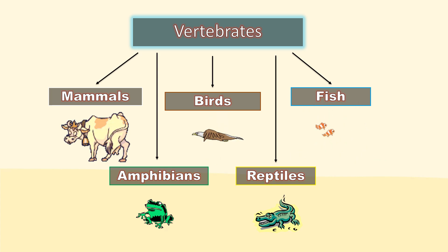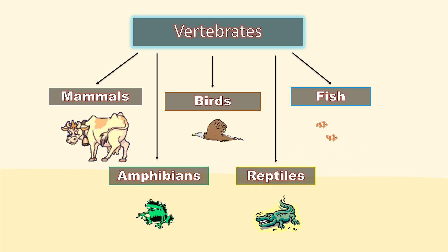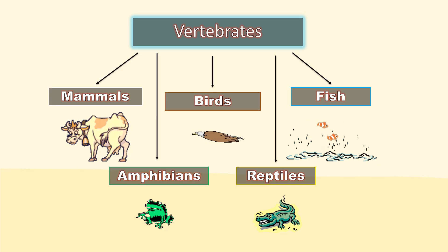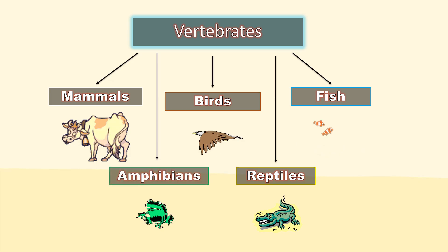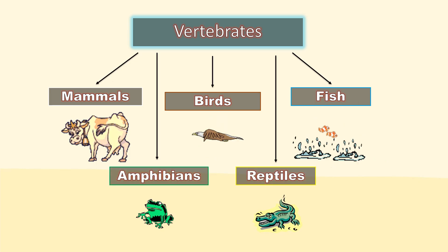Vertebrates are grouped according to their common characteristics. They are divided into five classifications: mammals, birds, fish, amphibians, and reptiles.